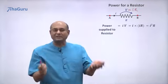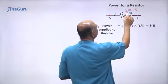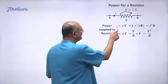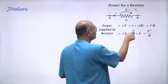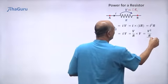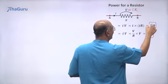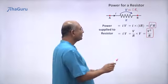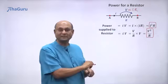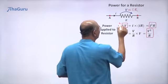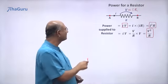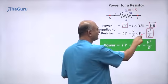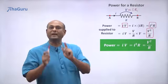Is this the only way to write the formula for a resistor's power? No, because I equals V/R. So we can write IV as (V/R) times V, which gives V squared by R. So we have two formulas: V²/R and I²R. Both give us the power for a resistor. These two are special formulas that only work for resistors, whereas IV works for all electrical objects. Power for a resistor: IV = I²R = V²/R.